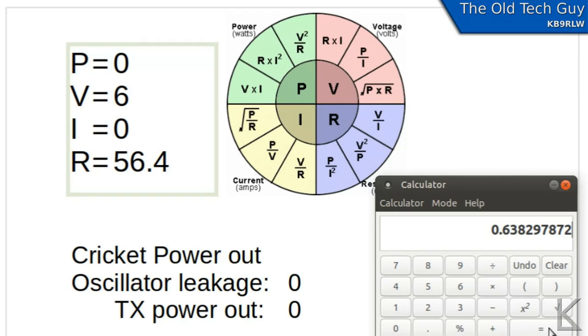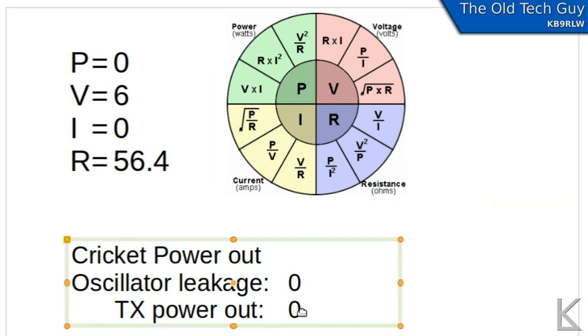I'm only going to go with three decimal points precision here which is probably going to drive some of the math nerds out there nuts but that's what I'm going to do. So 0.638 is our transmit power out. 638 milliwatts.